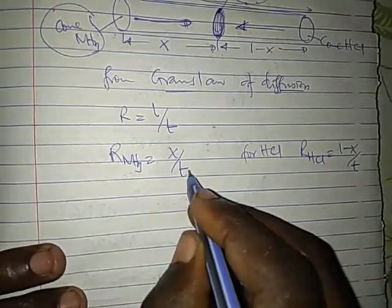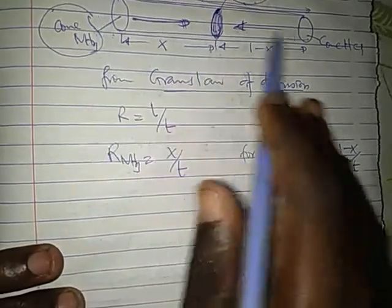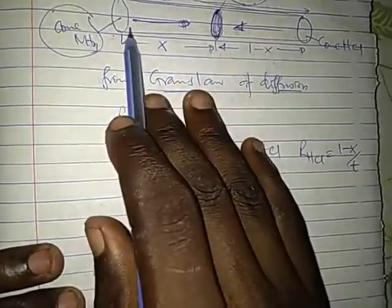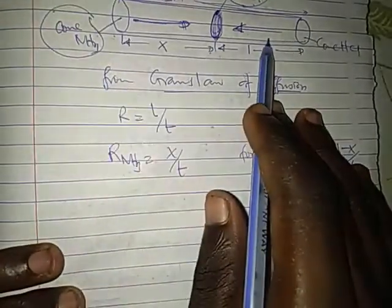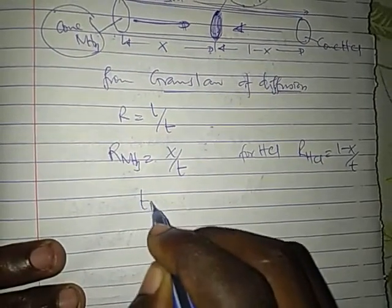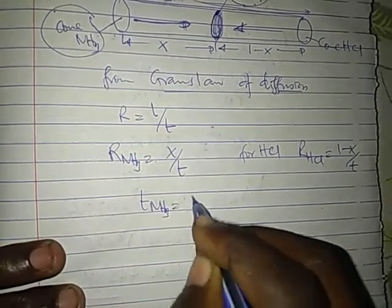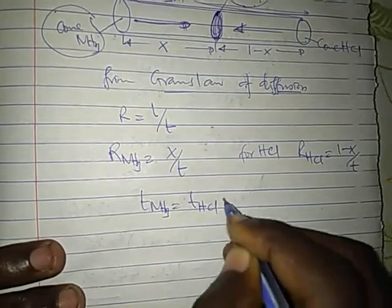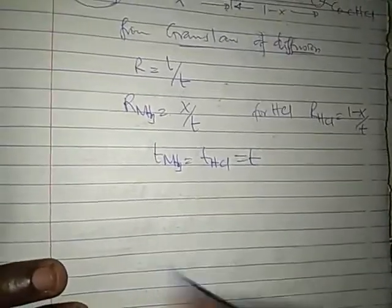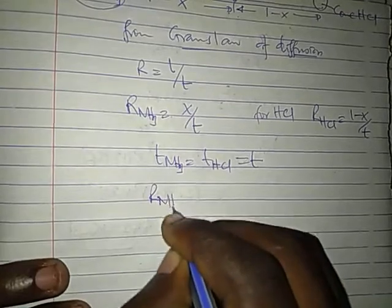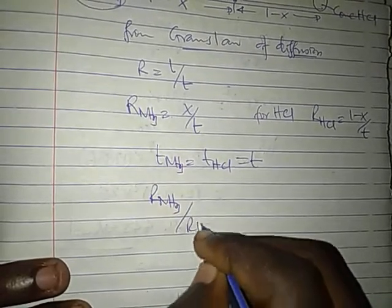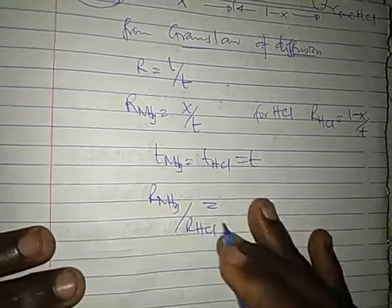Now remember that one diffuses this way and one diffuses this way. The times they use to diffuse are the same, and they meet here together. So time of NH3 is equal to time of HCl, let's say equal to t. Now rate of NH3 divided by rate of HCl will be equal to...